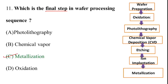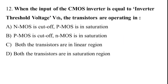Question 12: When the input of a CMOS inverter is equal to the inverter threshold voltage VTH, the transistors are operating in: A) NMOS cut off, PMOS in saturation; B) PMOS cut off, NMOS in saturation; C) both transistors in linear region; D) both transistors in saturation region.